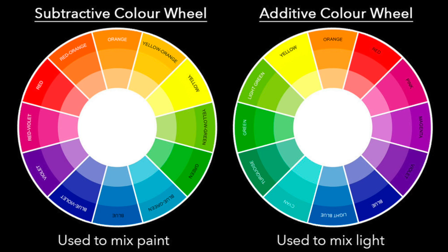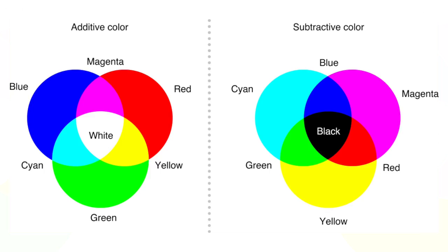Colors come in two major varieties: subtractive colors and additive colors. Additive colors are when light beams directly — this happens with things like your cell phone, computer, and TV. Additive colors have their own primary colors, which are red, blue, and green.